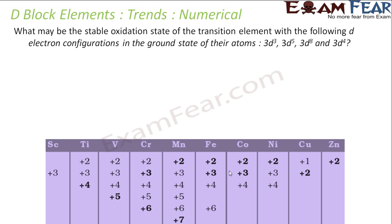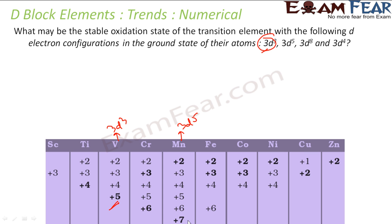Part: find the stable oxidation state of elements with the following ground state electronic configurations. 3d3 is vanadium, and the stable oxidation state of vanadium is +5. 3d5 is manganese — the stable oxidation states are +2 and +7. 3d8 is nickel with stable oxidation state +2, and 3d4 is chromium with stable oxidation states +3 and +6.